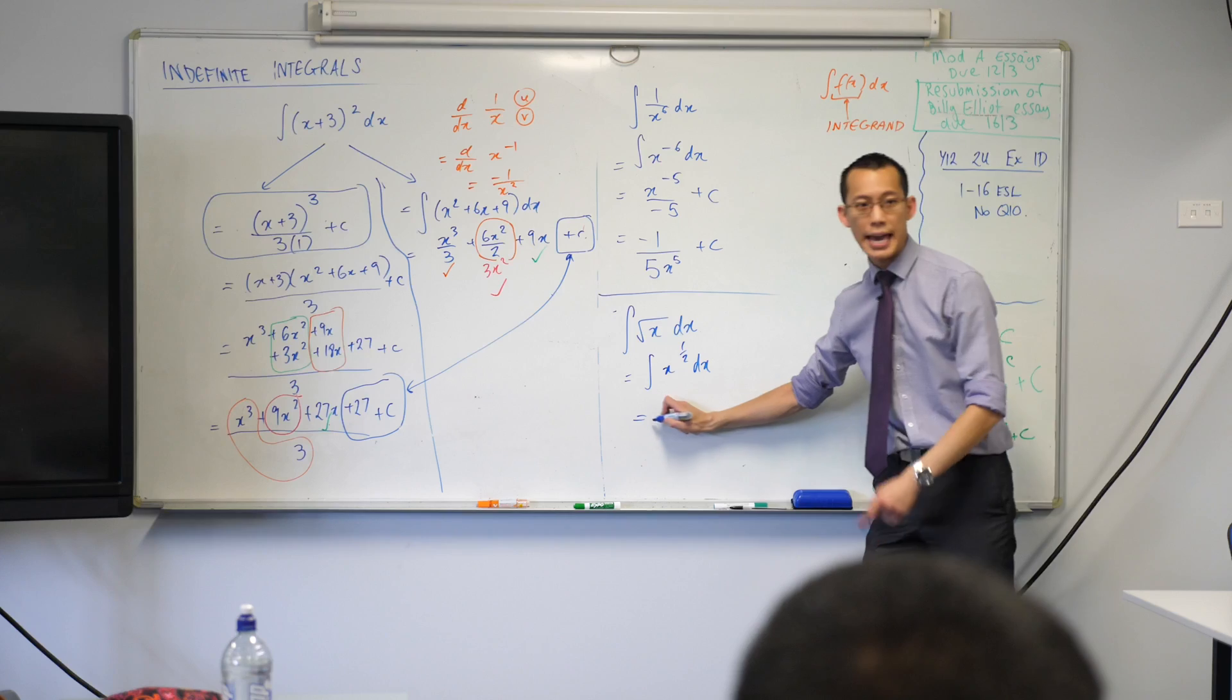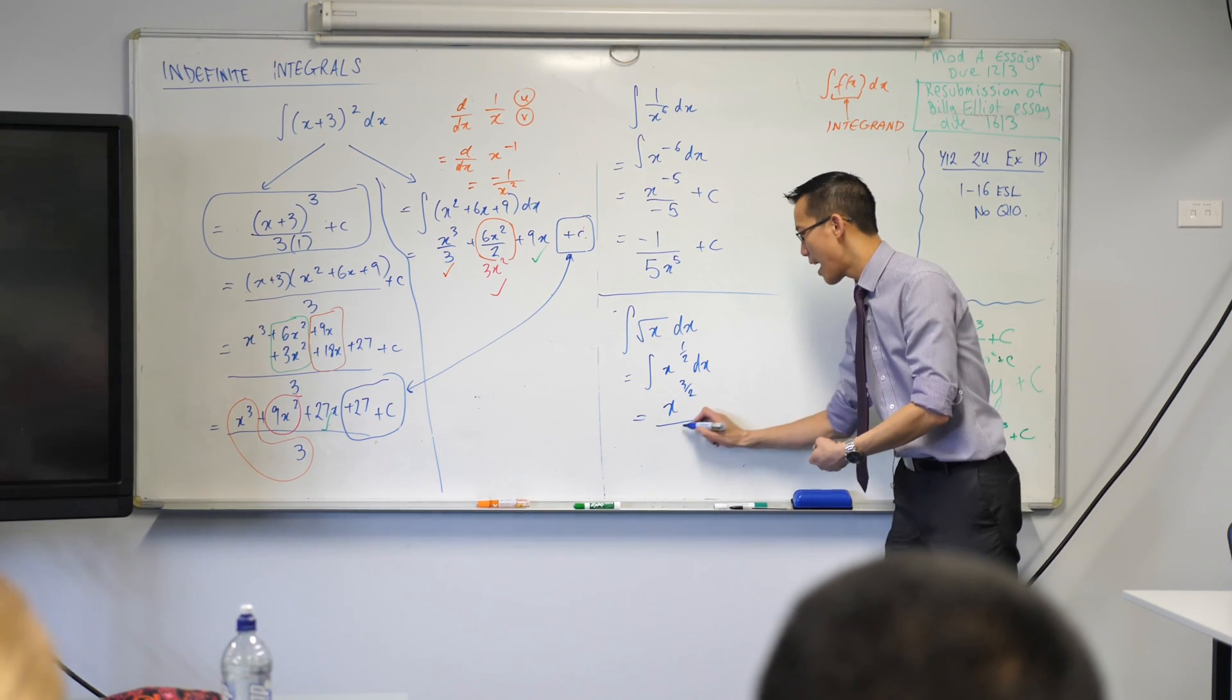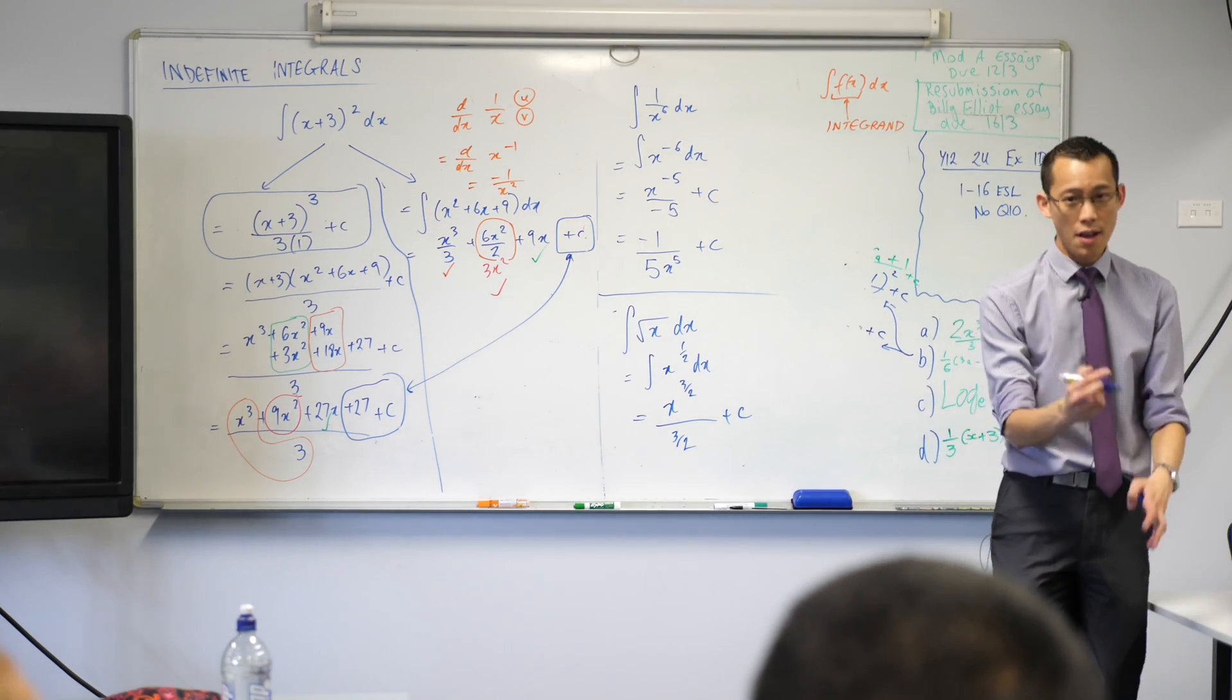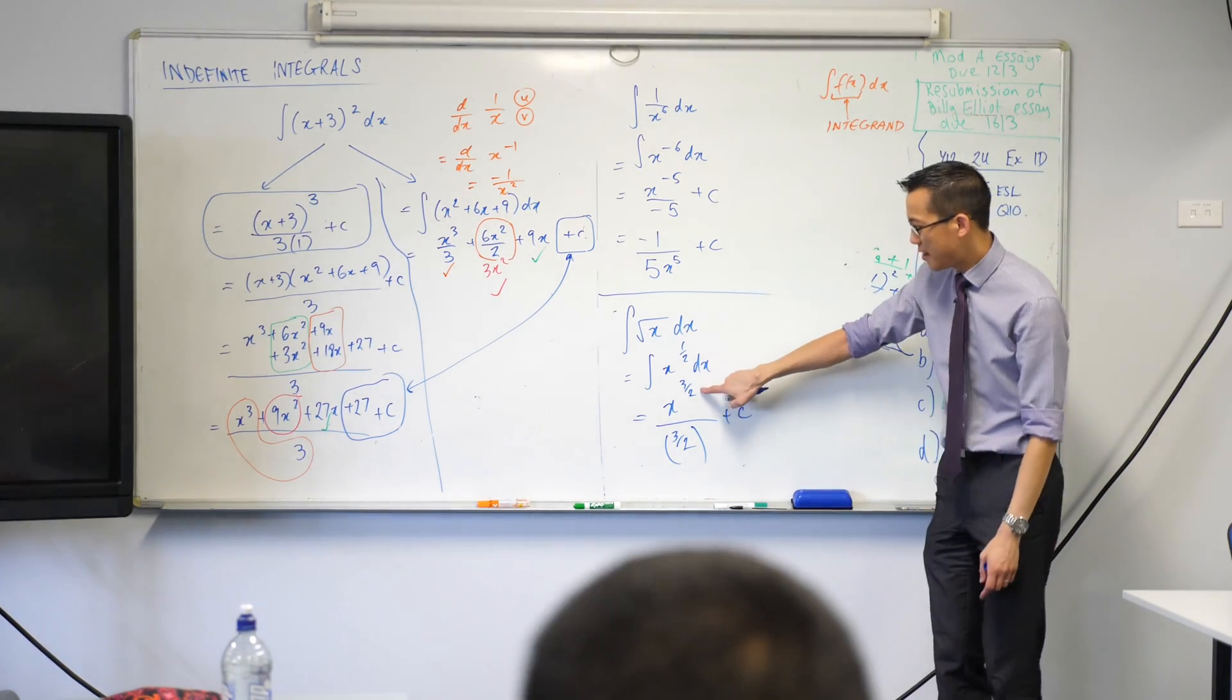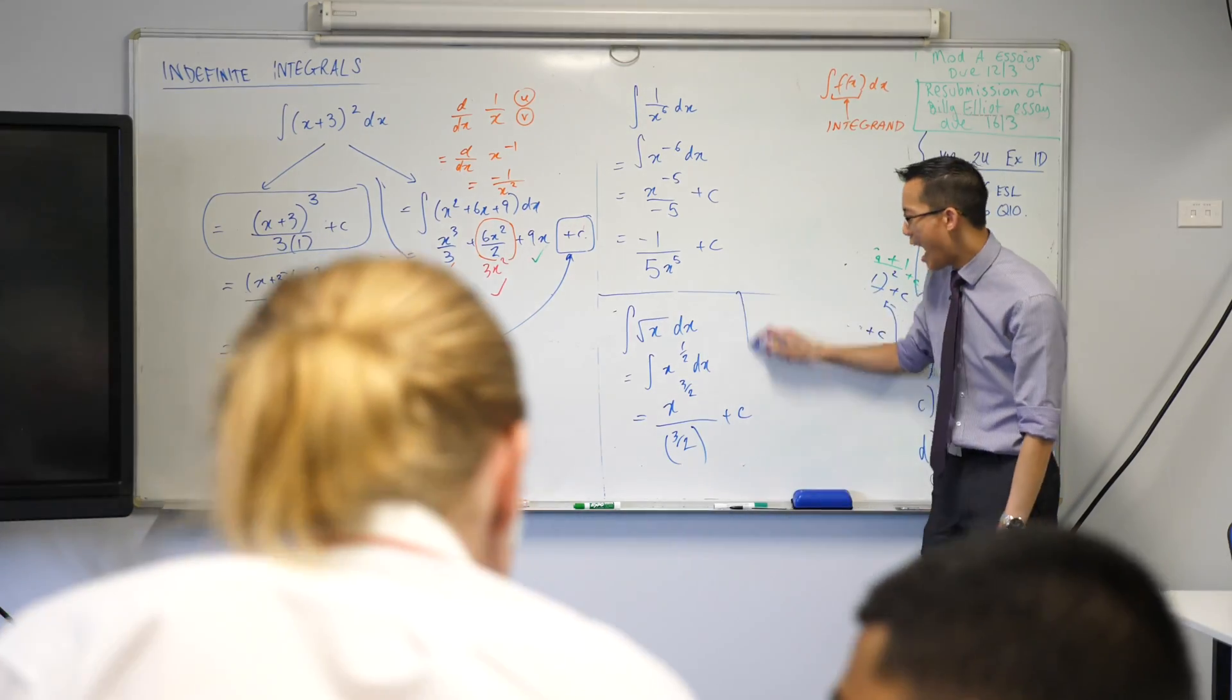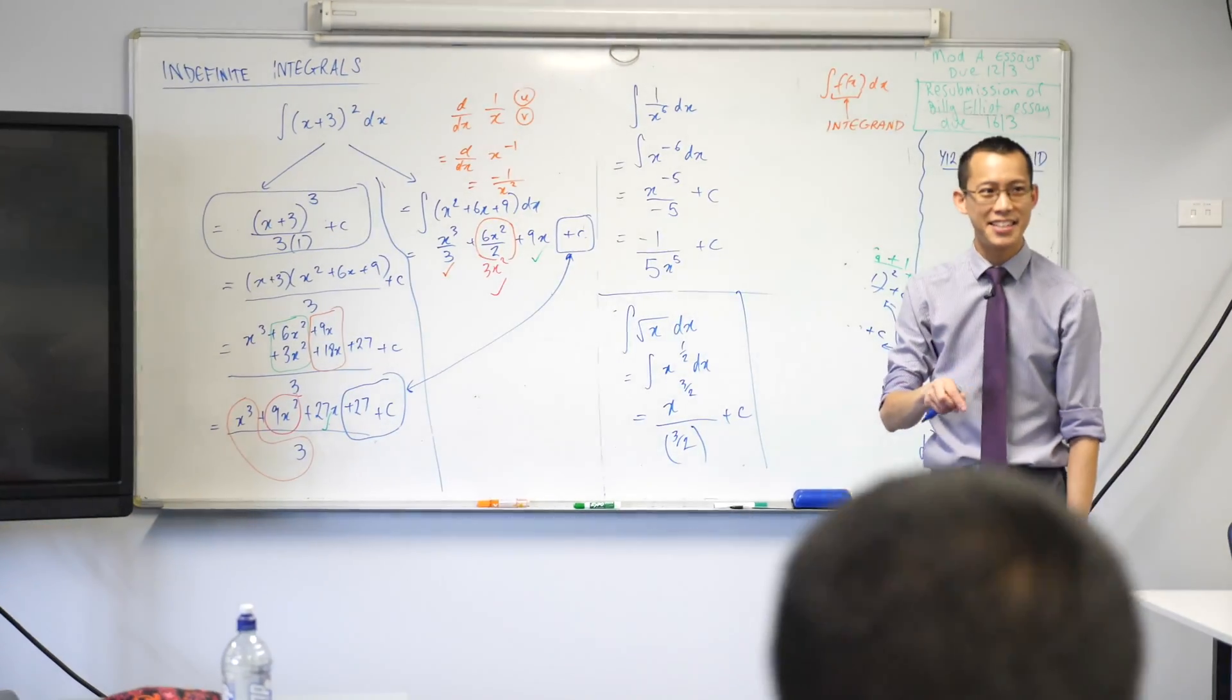When you get to your answer, right, index goes up, divide by new index, and strictly speaking, you are done. But this is weird and gross, isn't it? For starters, you've got a fraction on a fraction. And then secondly, this is not something we had in the original question, right? How would we rewrite this without any indices in it? What is X to the 3 on 2?